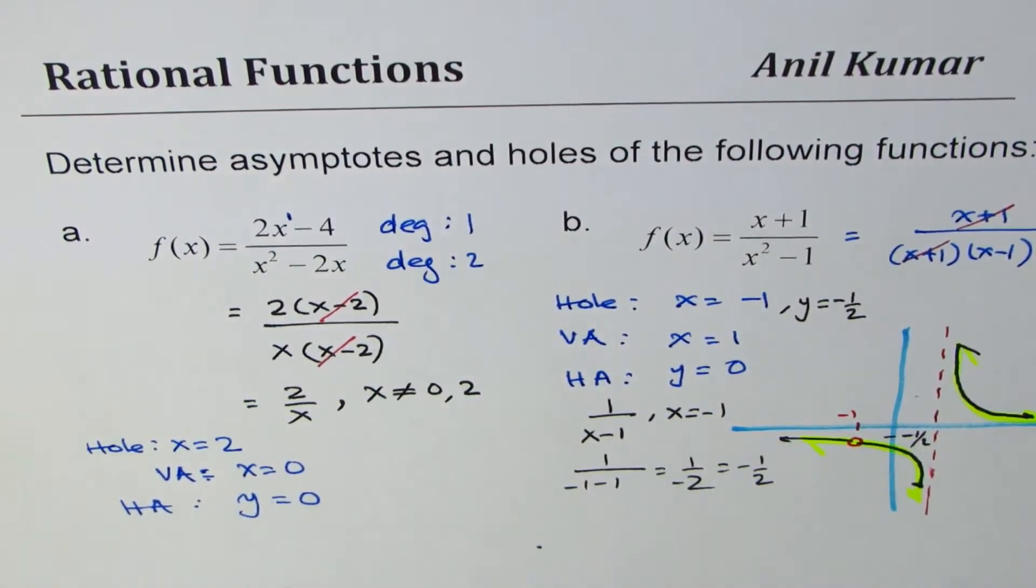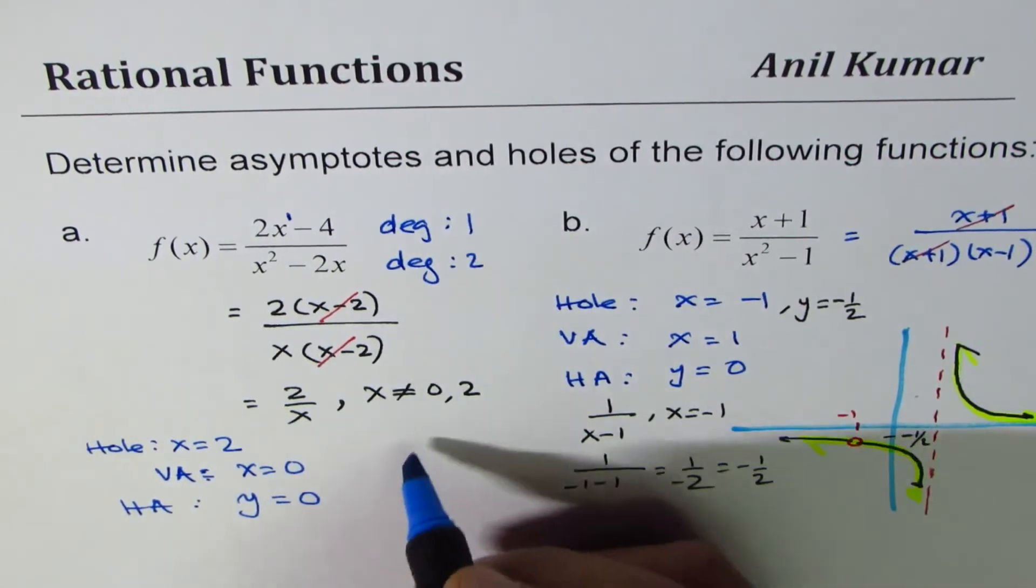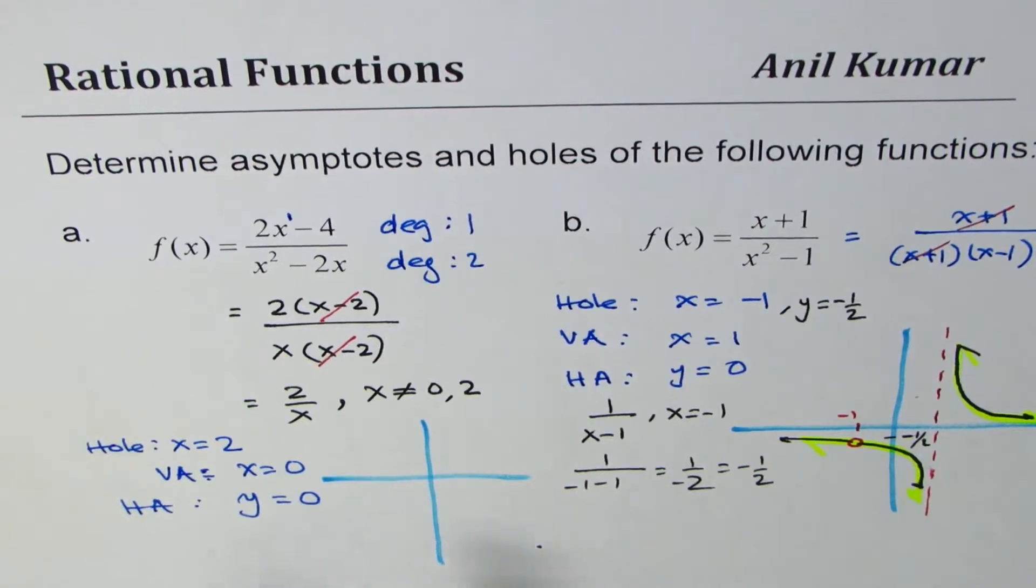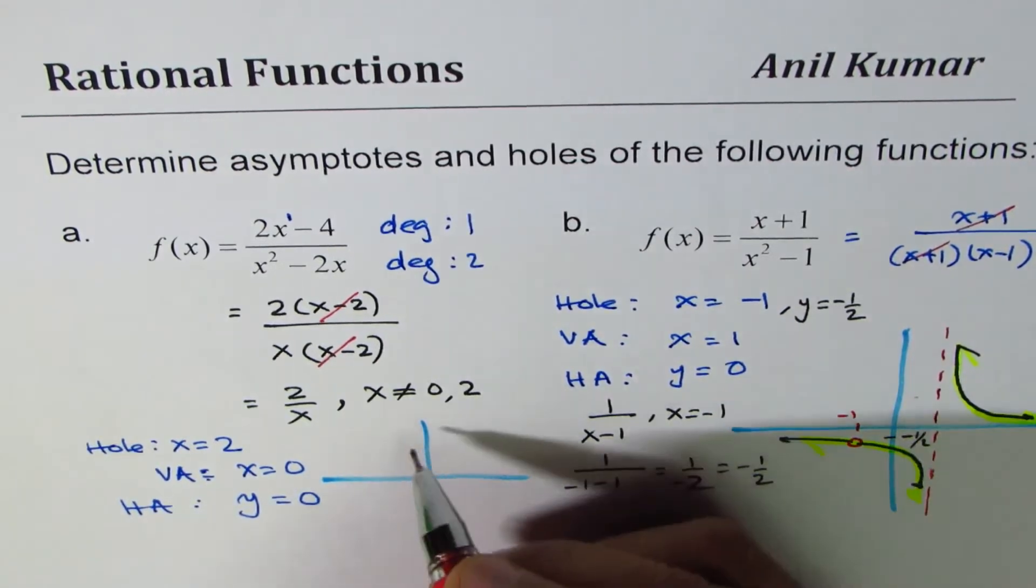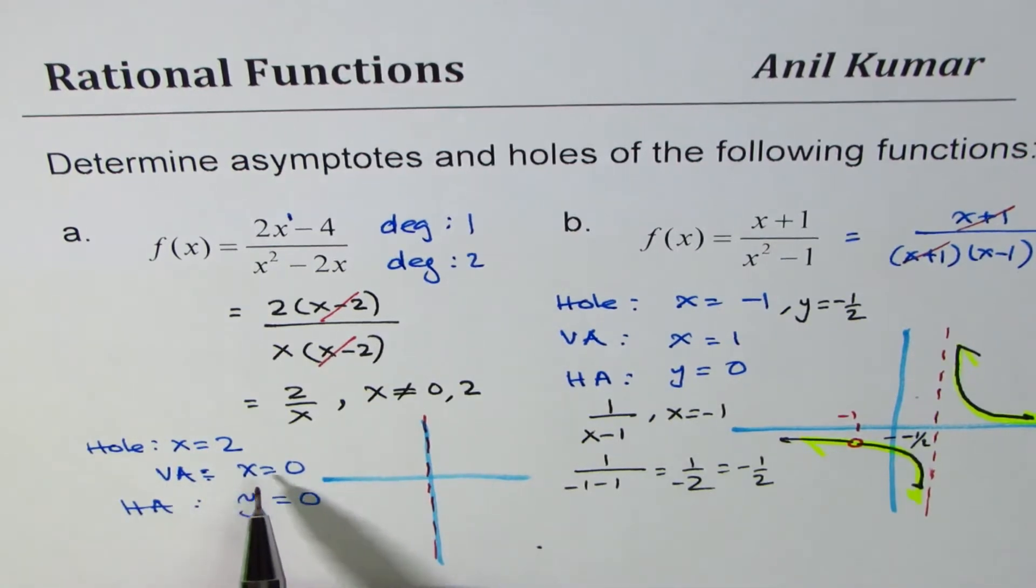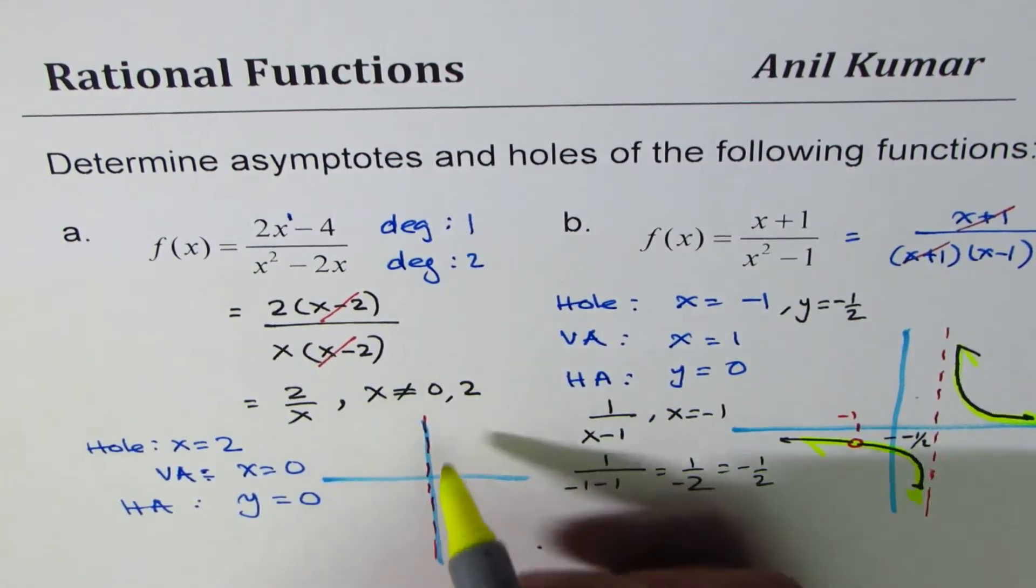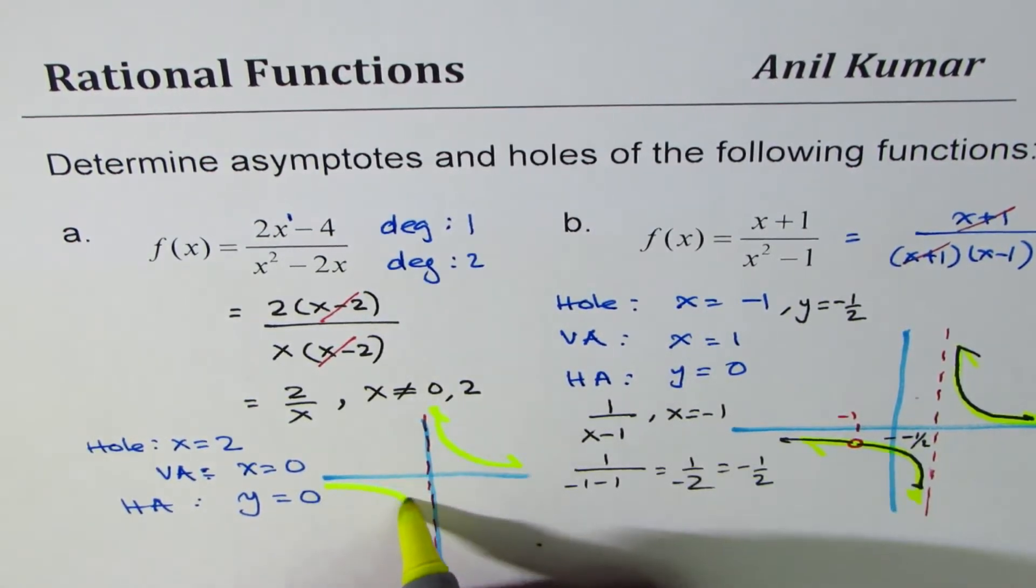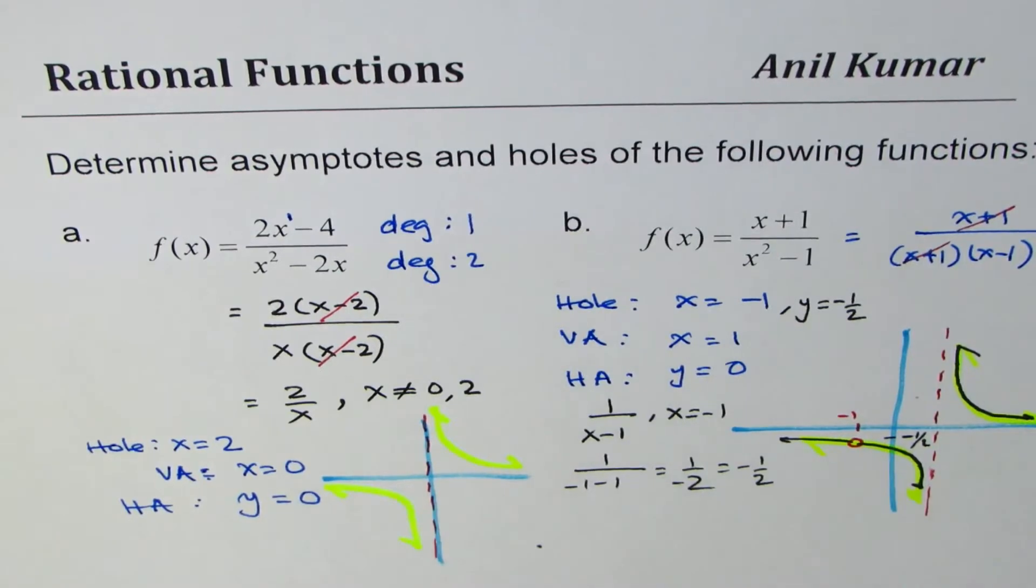The graph of this function is 2 over x graph with vertical asymptote at x equals 0, right there. Hole at x equals 2. 2 over x is kind of like this. So these are rough sketches, fairly good to understand the concept.